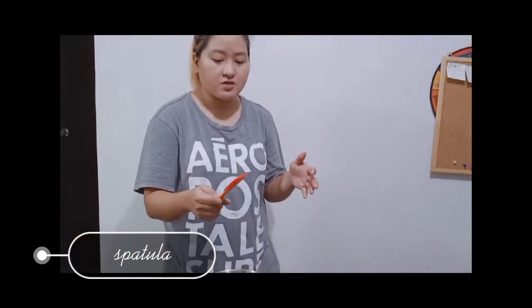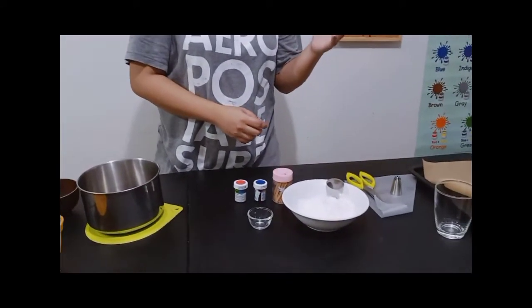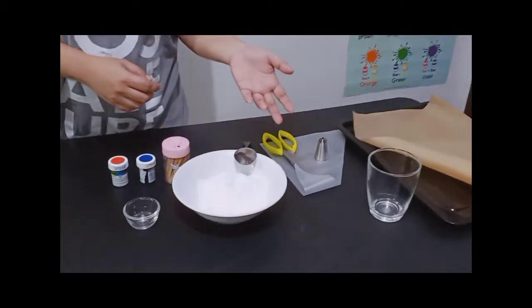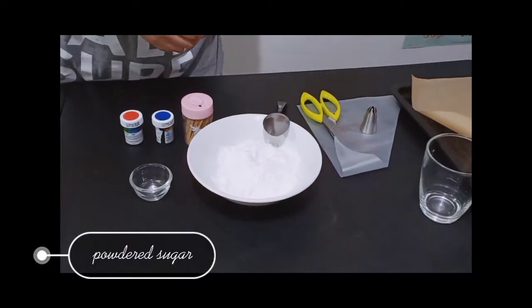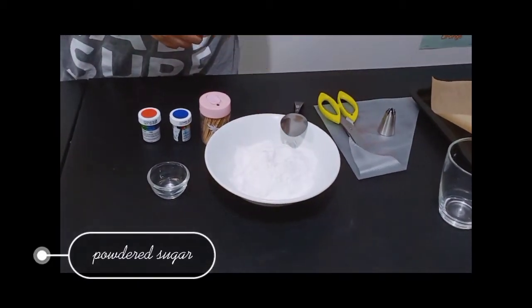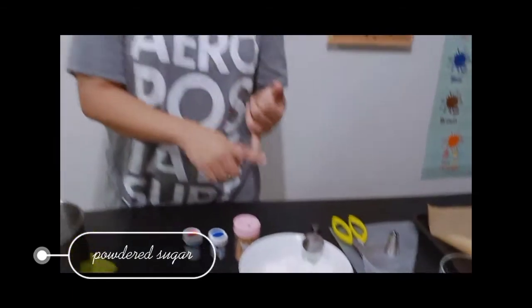And then, spatula, of course. Little orange spatula for scraping, so I don't waste ingredients. Now, we also will use one of our main ingredients - our confectioner sugar. So, it's basically powdered sugar. Confectionary sugar. Icing sugar. They're all the same.